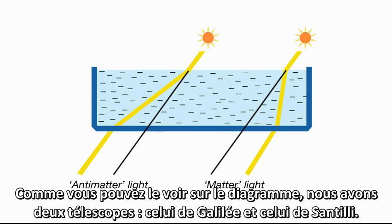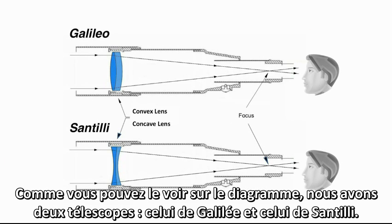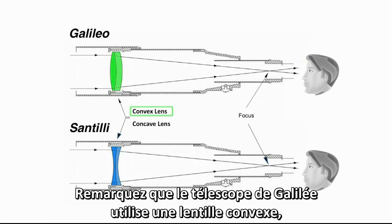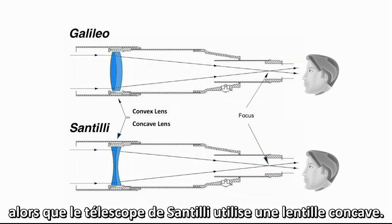As you can see in the diagram, we have two telescopes: the Santilli and the Galileo. If you look closely, you'll see that the only real difference between the two is the lens. Notice that the Galileo uses a convex lens, whereas the Santilli telescope uses a concave lens.